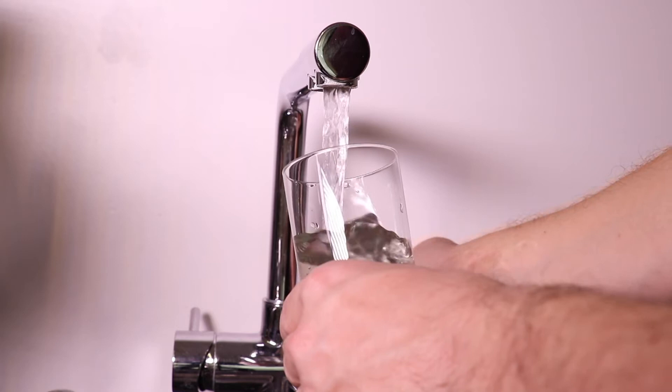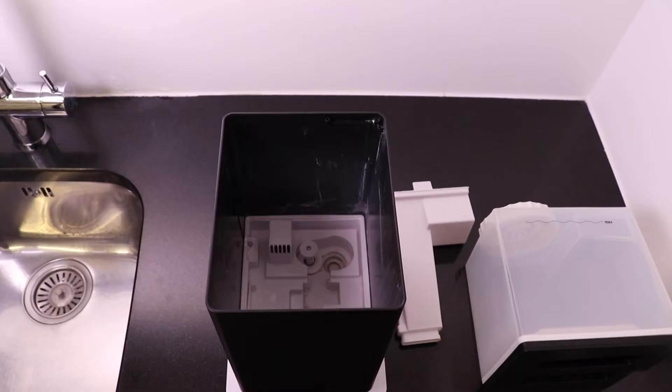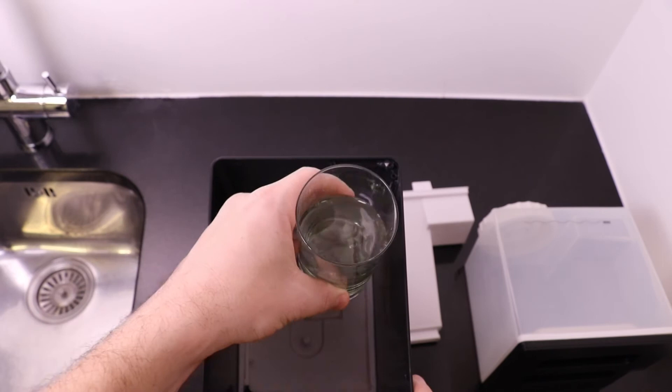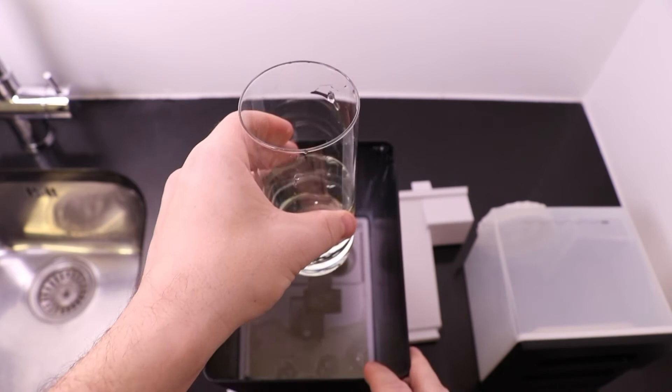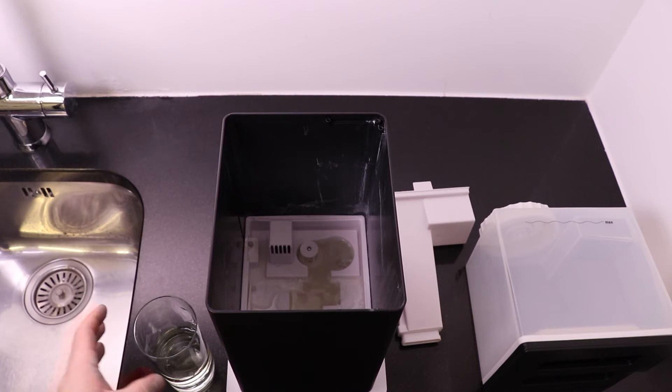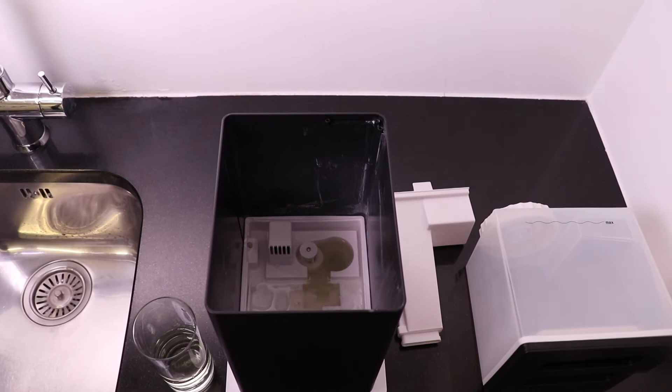Please mix some descaling agent with water in a glass and then pour it into the unit. For dissolving all the minerals, it will take you some 10 to 20 minutes. If you're not happy with the result or there are still some remaining minerals, please just repeat the process with new decalcifying agent and new water.